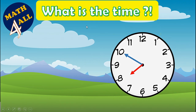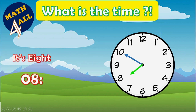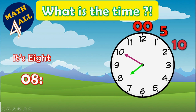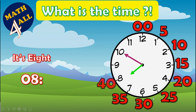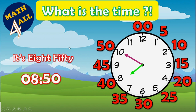What is the time? Look at the short hand — it's on eight, so I write 'eight.' Now look at the long hand: skip count by fives to reach ten: five, ten, fifteen, twenty, twenty-five, thirty, thirty-five, forty, forty-five, fifty. It's eight fifty. So you learned that one day equals 24 hours, each hour contains 60 minutes. Thank you!